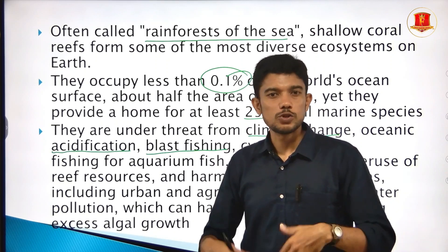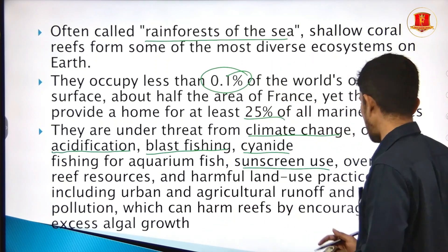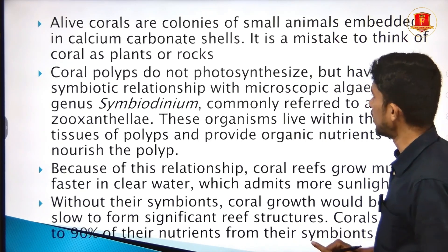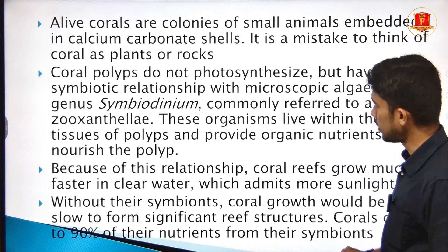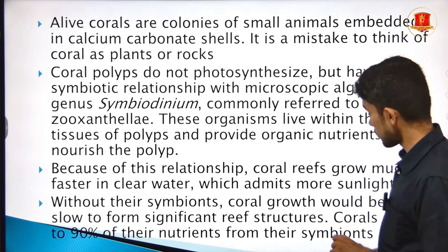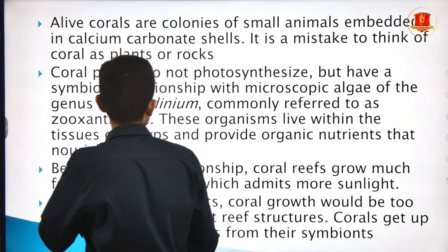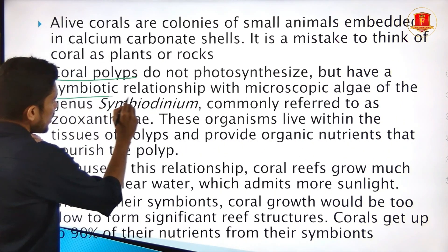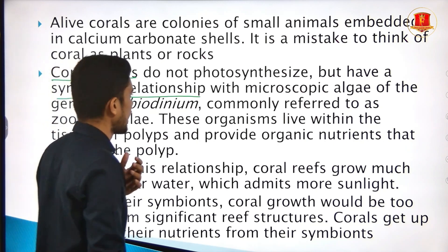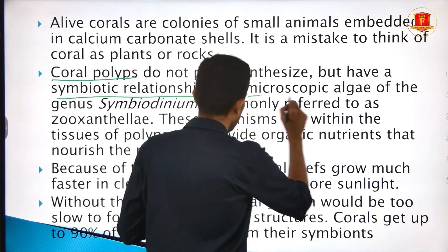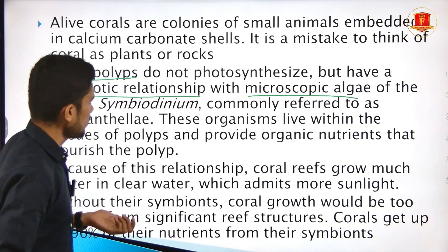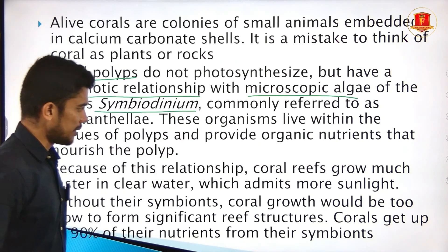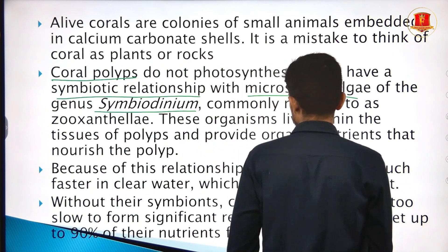Photosynthesis is essential to coral reefs. Coral polyps exist in shallow areas where sunlight can reach. They have a symbiotic relationship with microscopic algae called symbiodinium, also known as zooxanthellae.